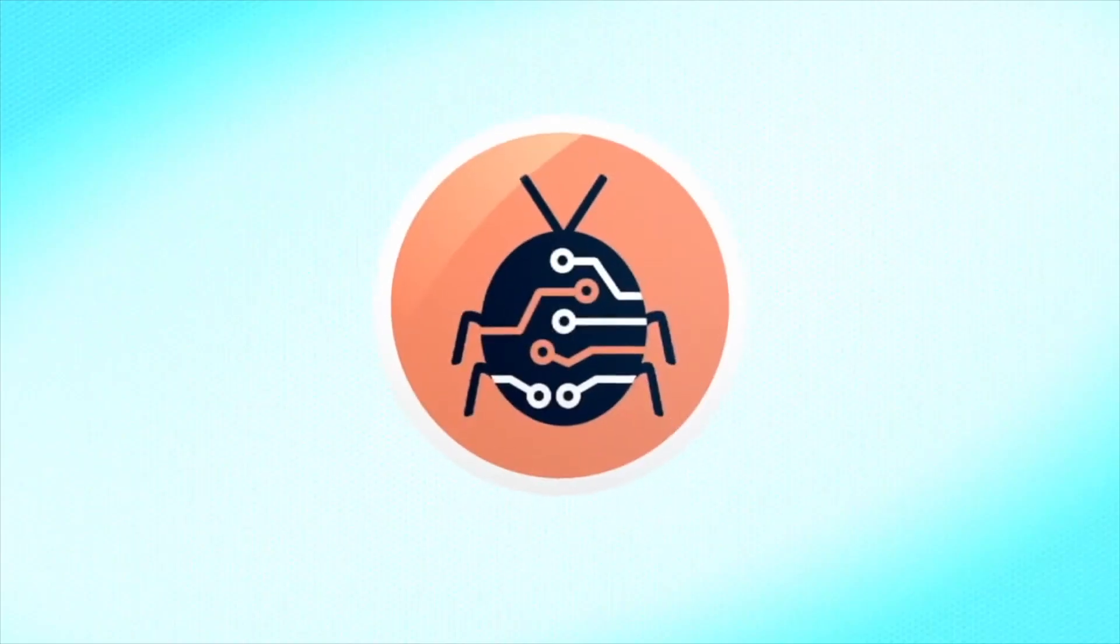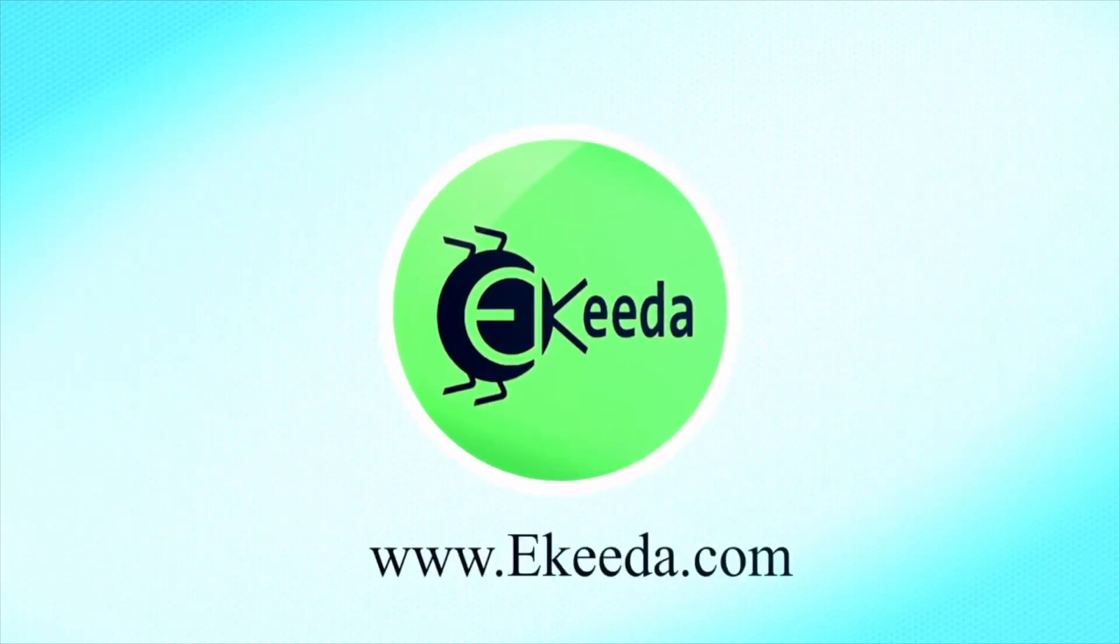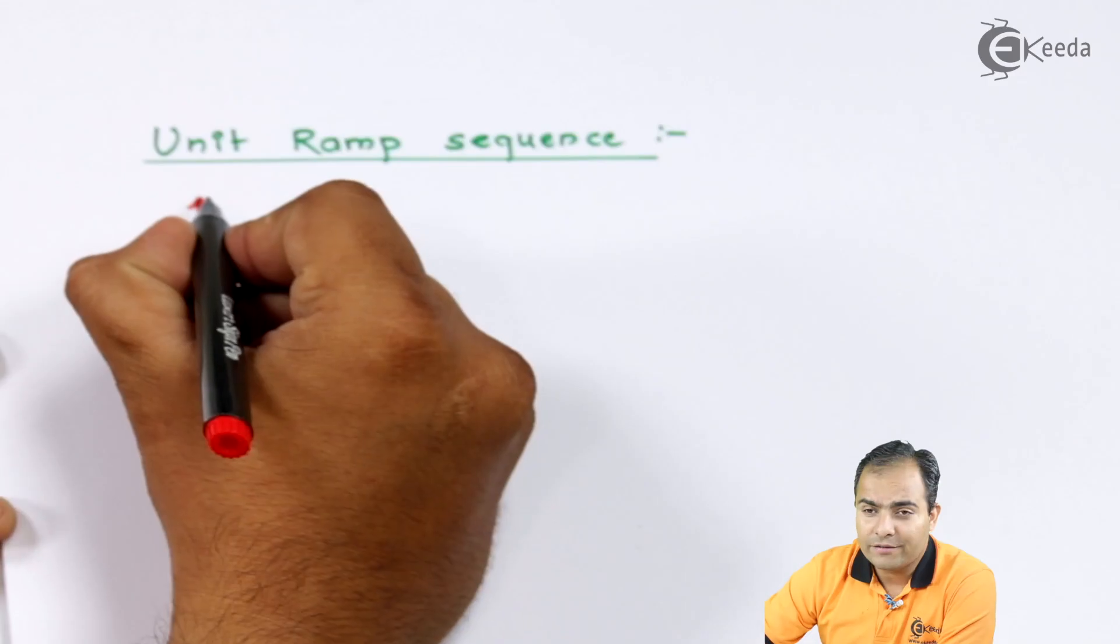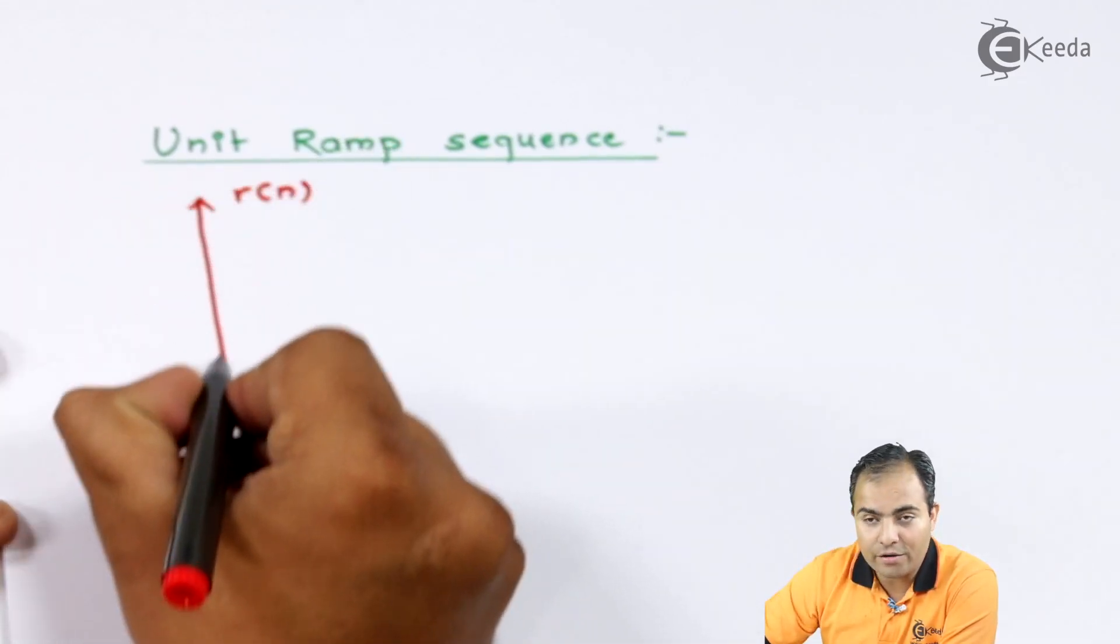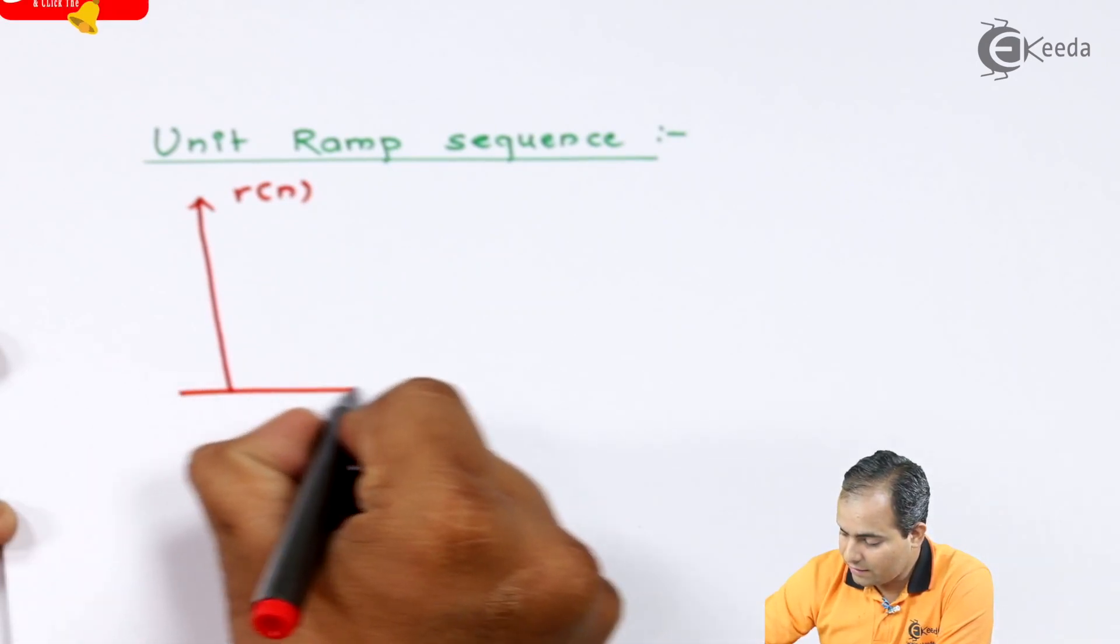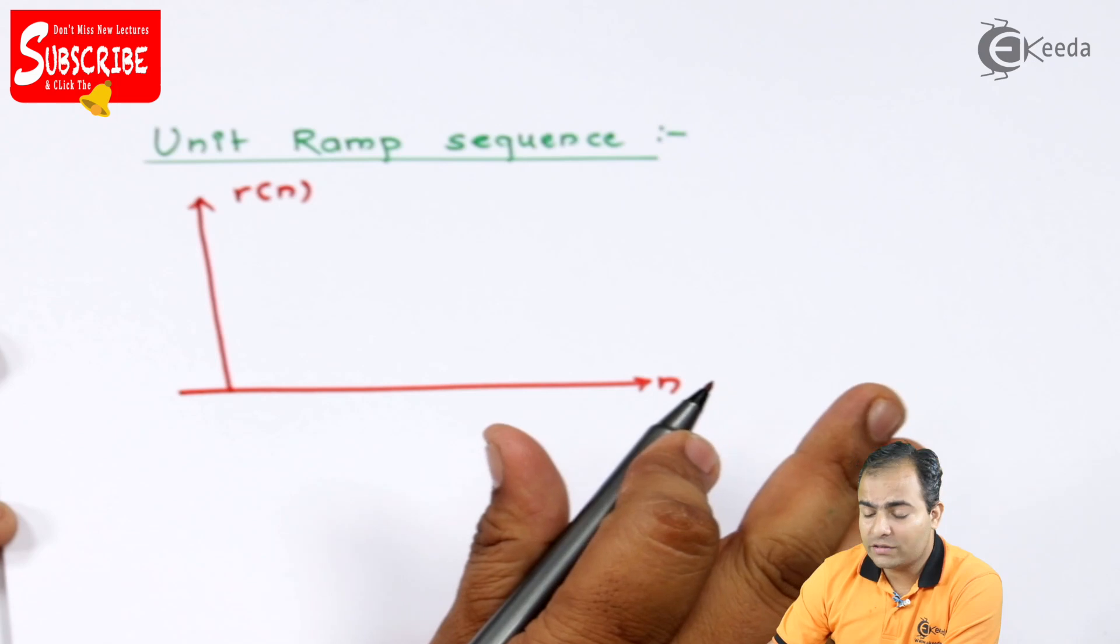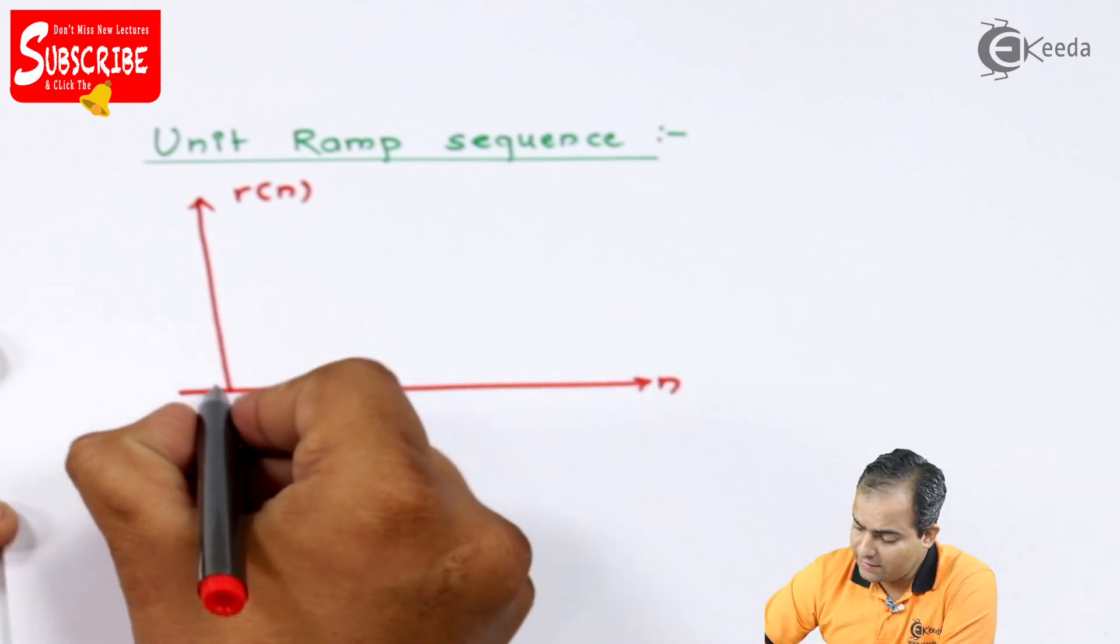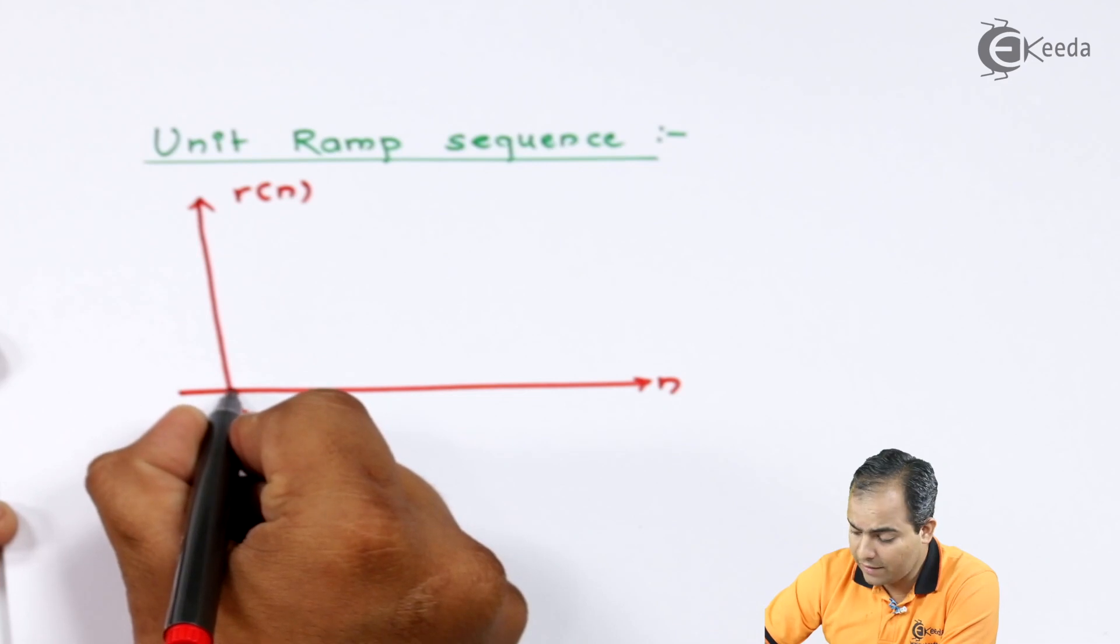this graph where this ramp wave is represented by, let's say, r(n). The function is plotted like zero for having zero amplitude